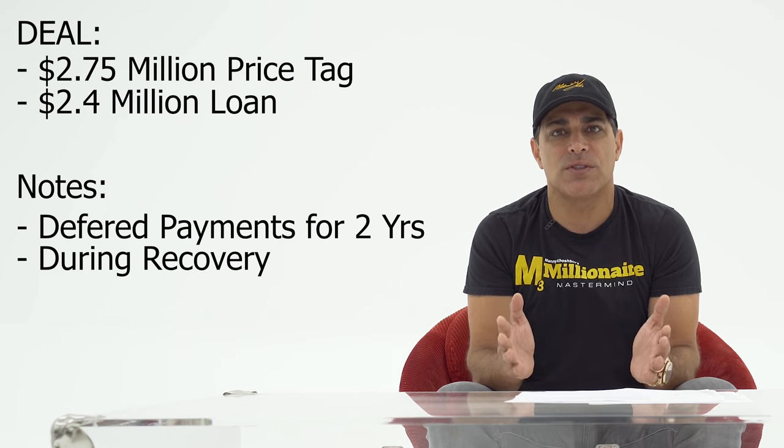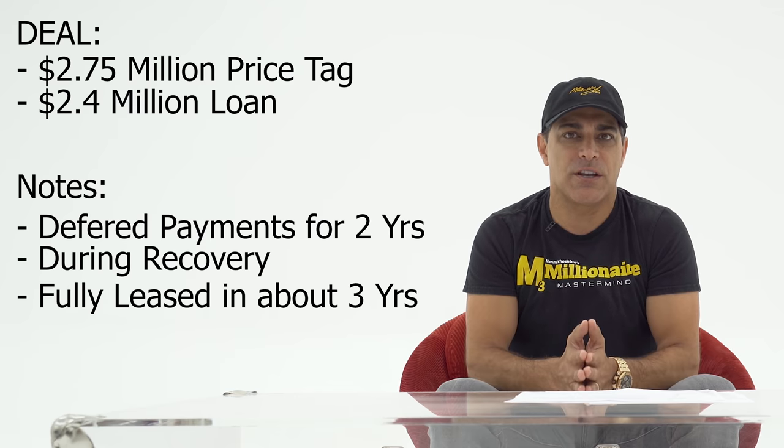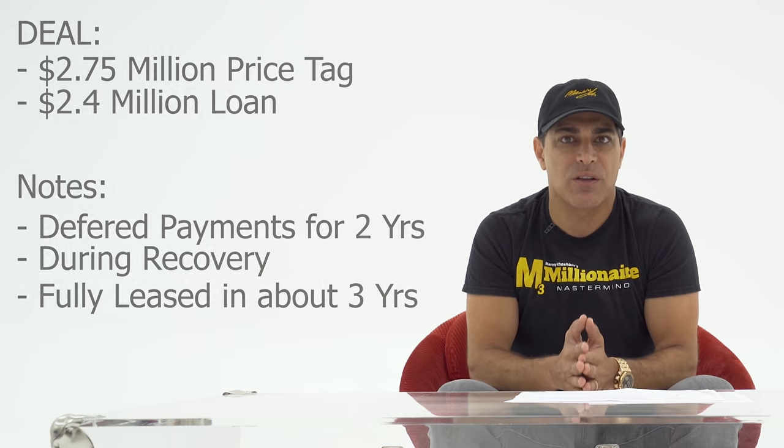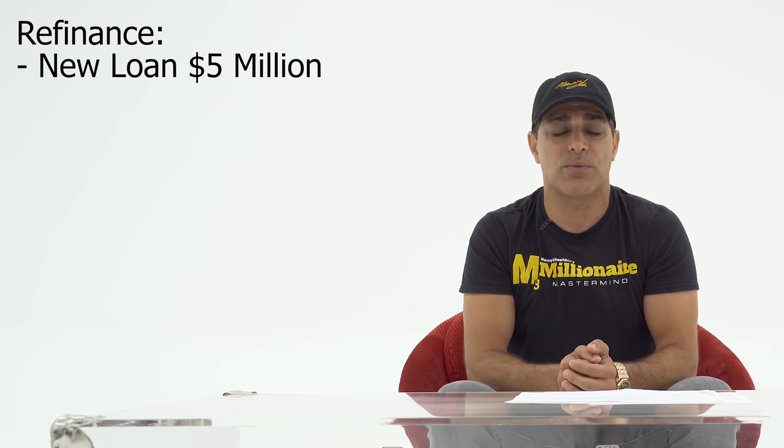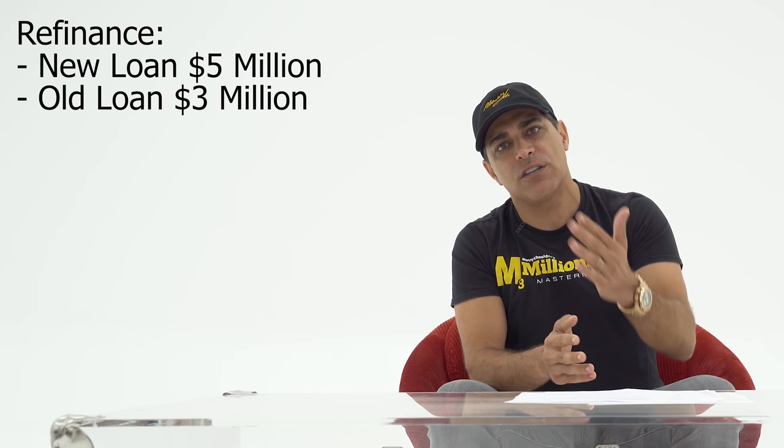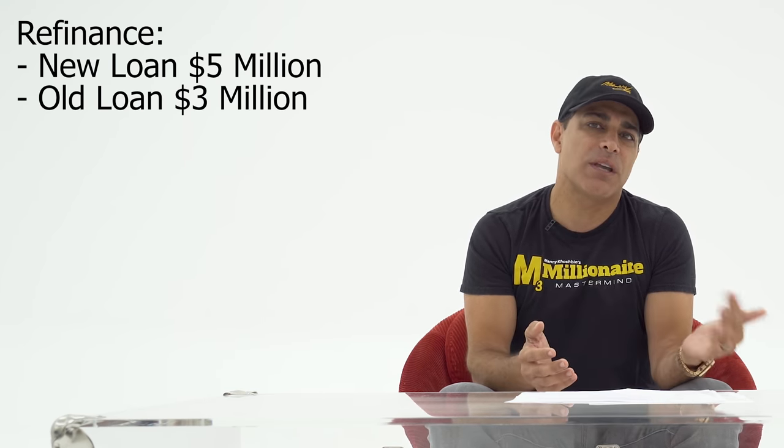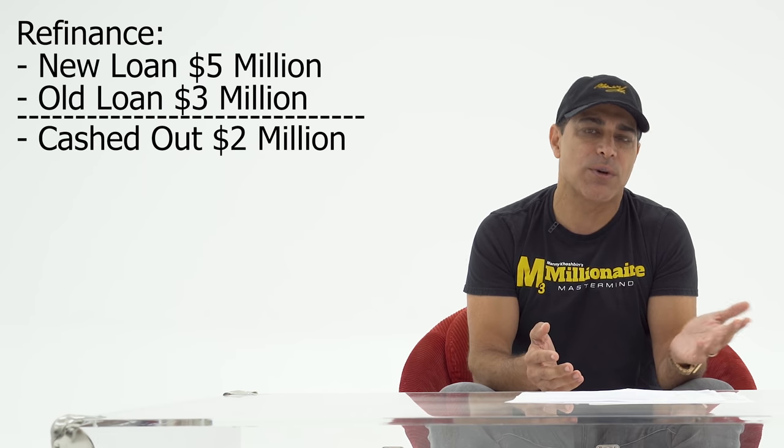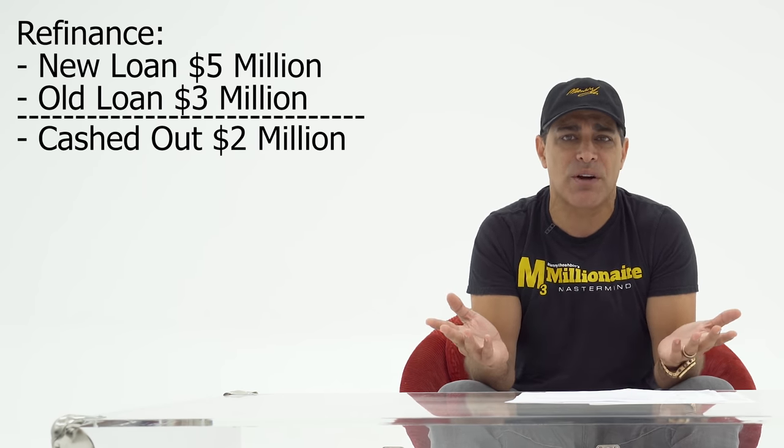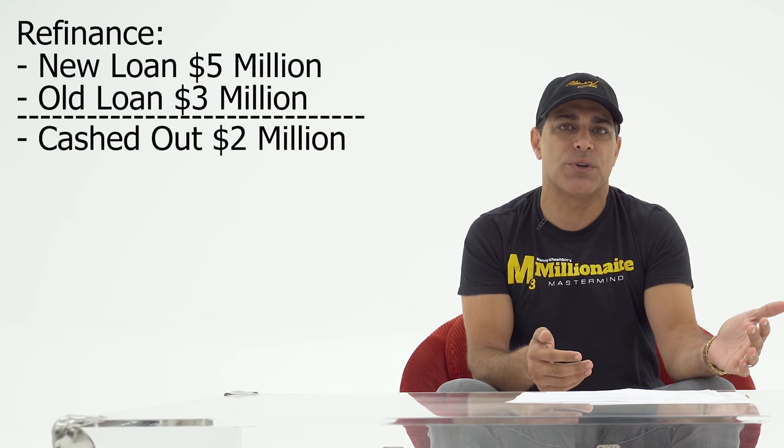The property was fully stabilized, that means fully leased within three years. In mid 2016, a little over three years, I was able to refinance and pull out a $5 million loan from that property. I owed about $3 million with all the deferred interest that was piling up on the hard money loan. So they made about $500,000 and I didn't have to pay any loan payments for two years.